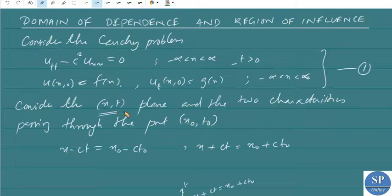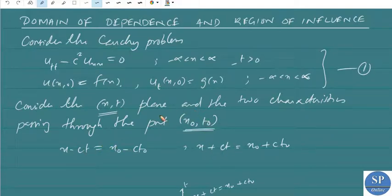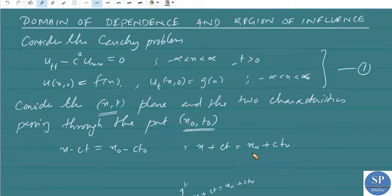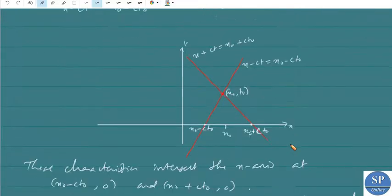Now consider the x-t plane. We know the characteristics are given by x minus ct = constant and x plus ct = constant. At the point (x0, t0), the characteristics are given by x minus ct = x0 minus ct0 and x plus ct = x0 plus ct0. We have already discussed this before.